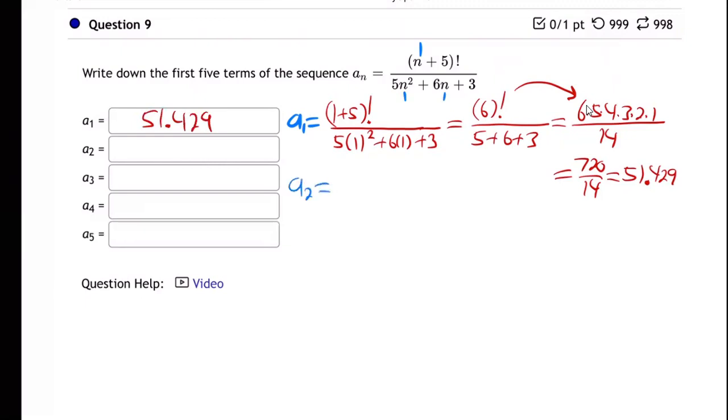a sub 2 - we're going to do the same thing. We're going to plug in 2 everywhere. So we will get 2 plus 5 factorial over 5 times 2 squared plus 6 times 2 plus 3, equals 7 factorial over - what's that - 5 times 4 is 20, plus 12, plus 3...